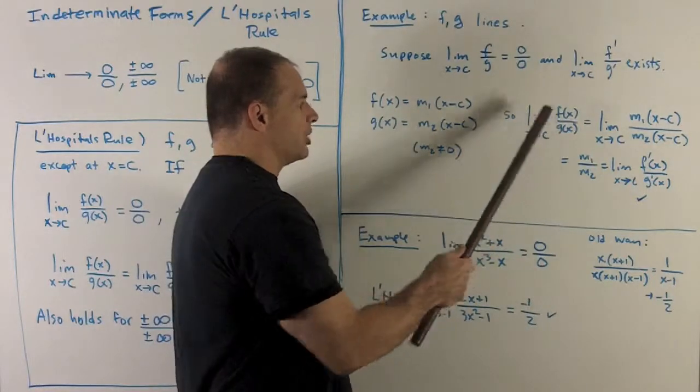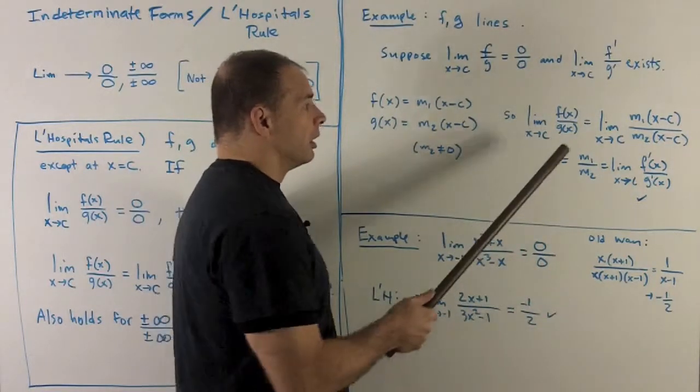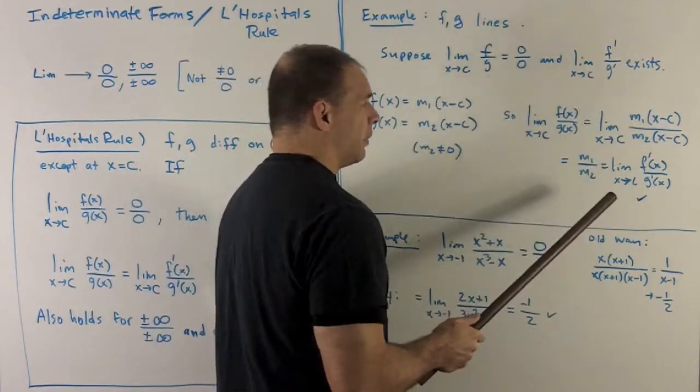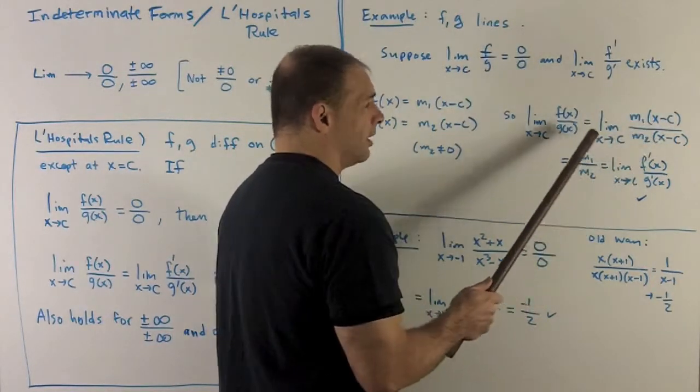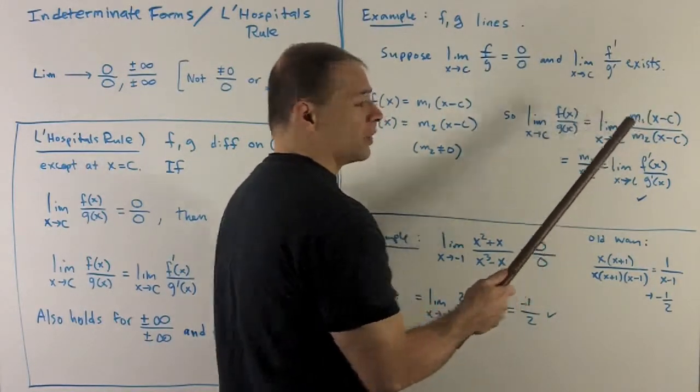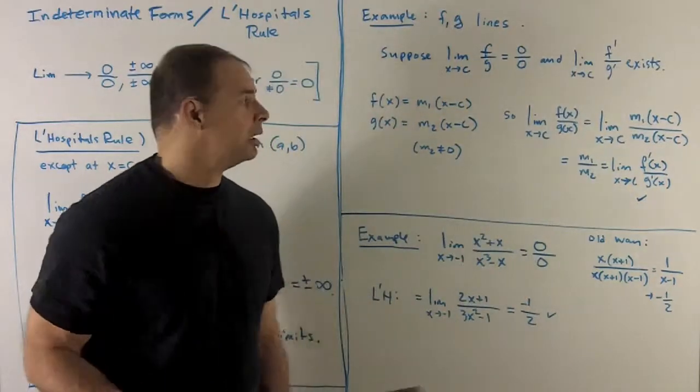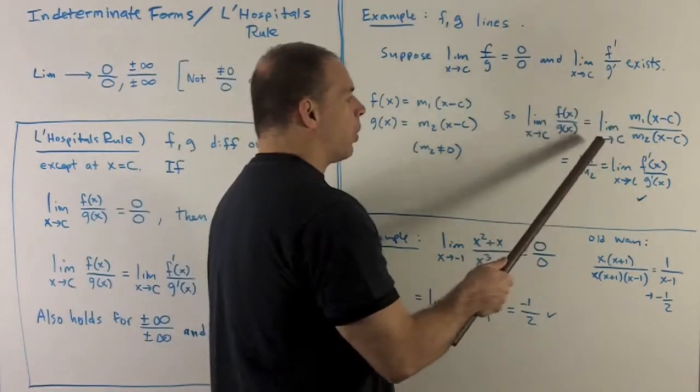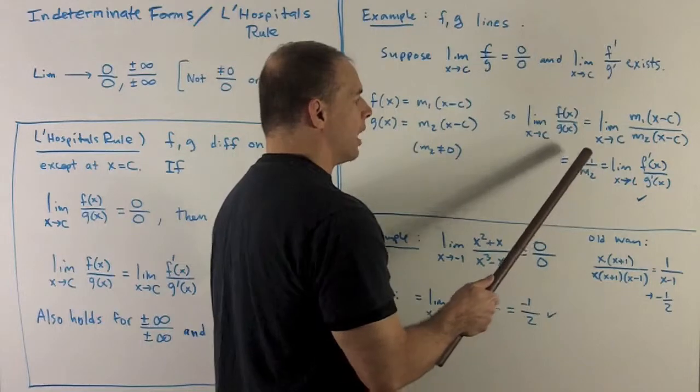I take the limit of my ratio. We write our equations in. And then we notice the x minus c's are going to cancel out. Limit of a constant, m1 over m2, is just some number. Limit of that, no matter what we take the limit to, is going to go to m1 over m2.